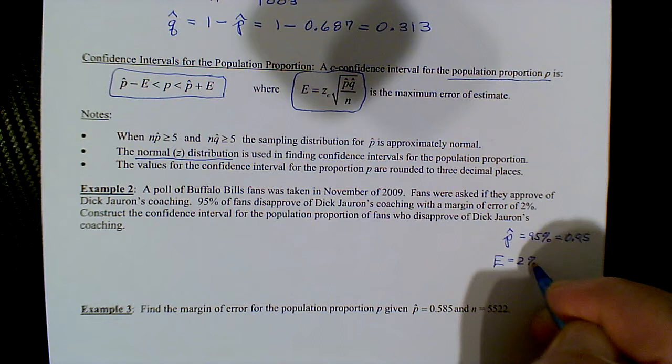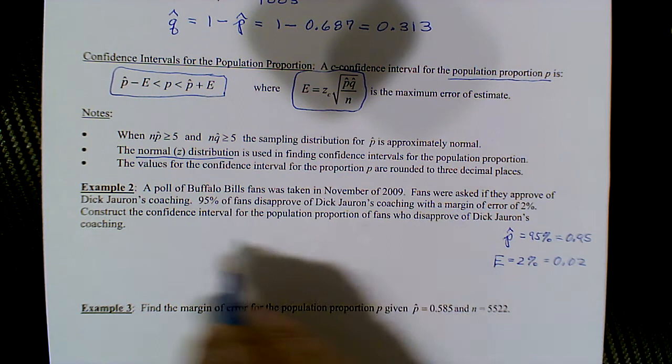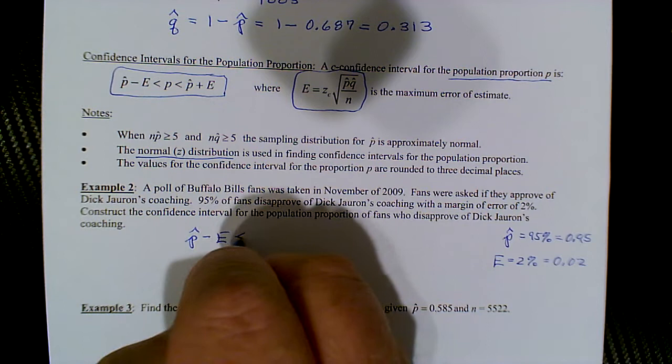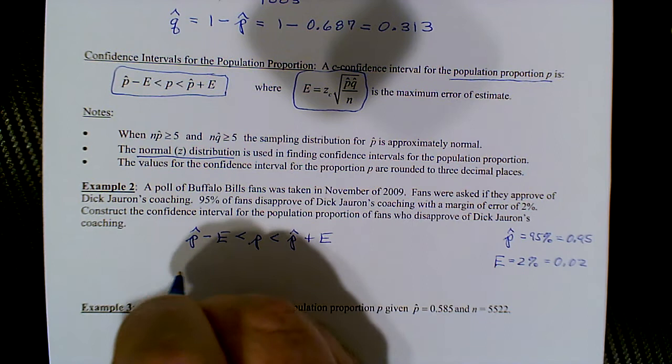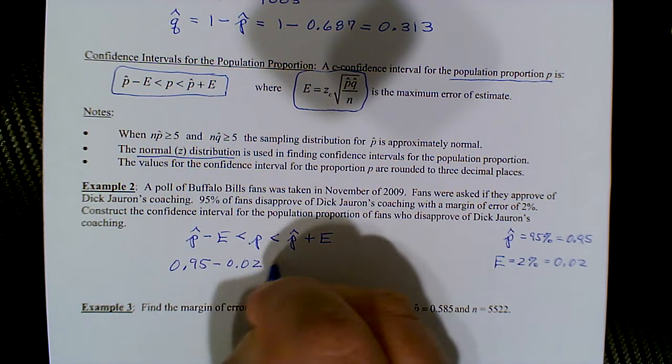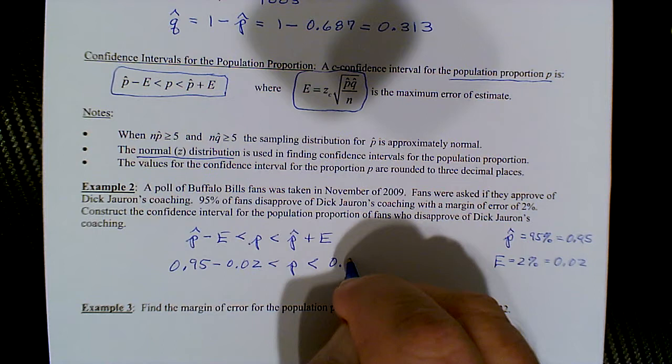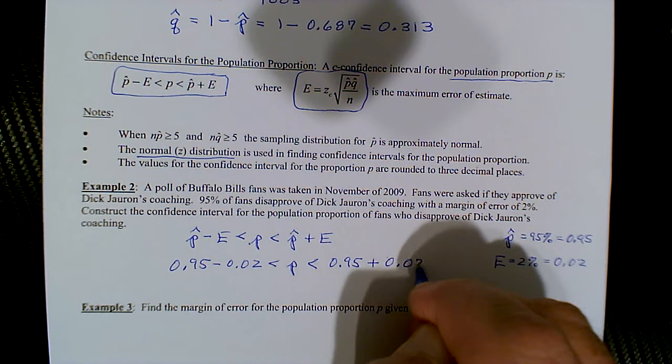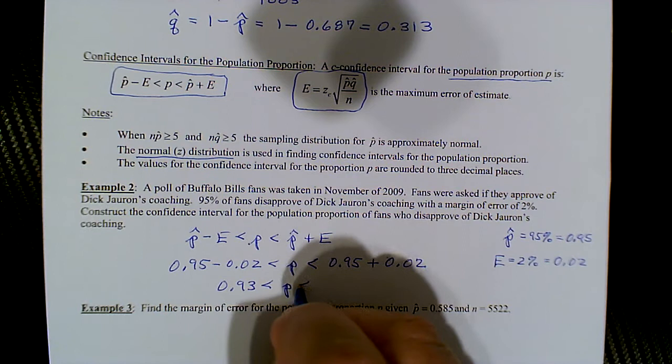The margin of error is 2% or 0.02. To construct the confidence interval, we use p-hat minus e < p < p-hat plus e. So 0.95 minus 0.02 < p < 0.95 plus 0.02, giving us 0.93 < p < 0.97.